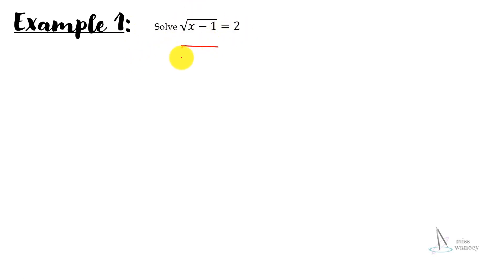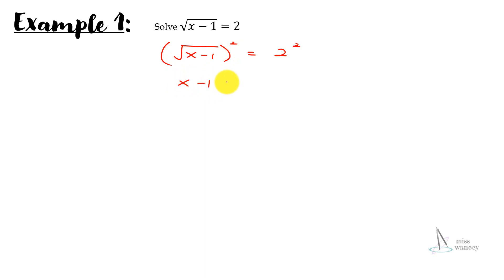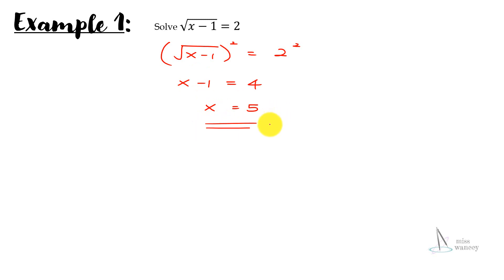So the square root of x minus 1 — we're going to square both sides, and the right-hand side also gets squared. Squaring the square root gets rid of it, so we're left with x minus 1 equal to 2 squared, which is 4. Therefore x must be equal to 4 plus 1, which is 5.